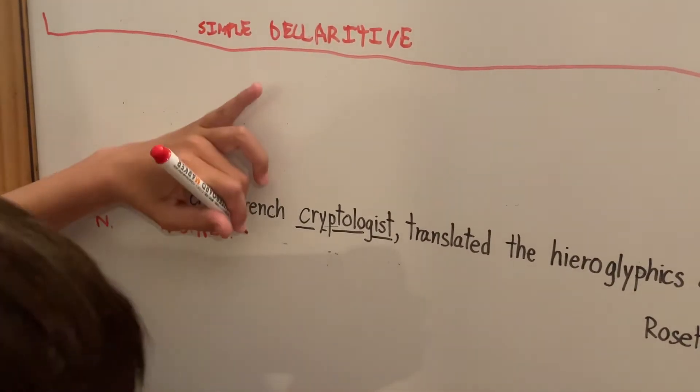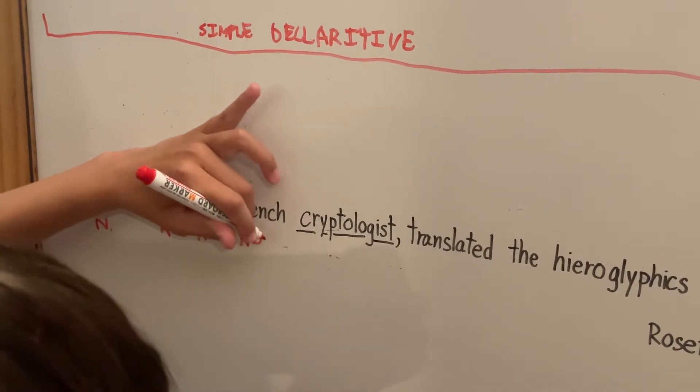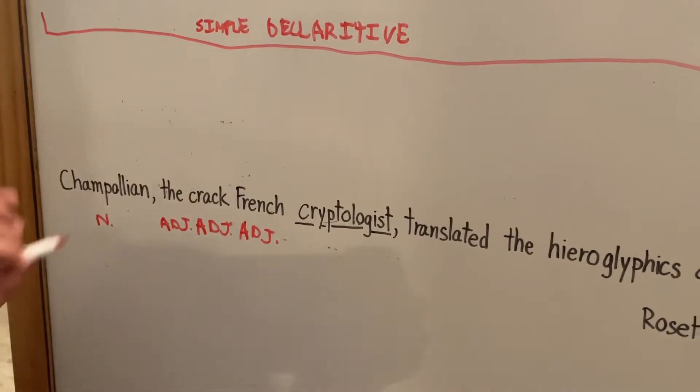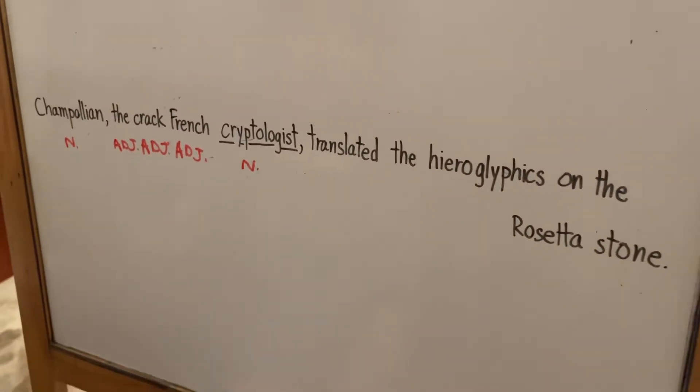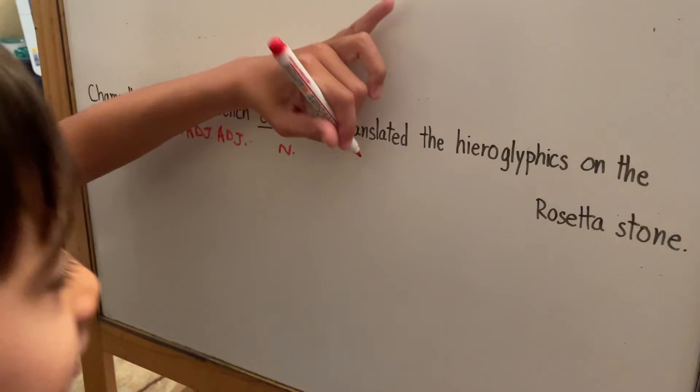French is an adjective because what type of cryptologist is it? He's a French cryptologist. Cryptologist—noun. And then translated is a verb because that's what Trampoleon did.